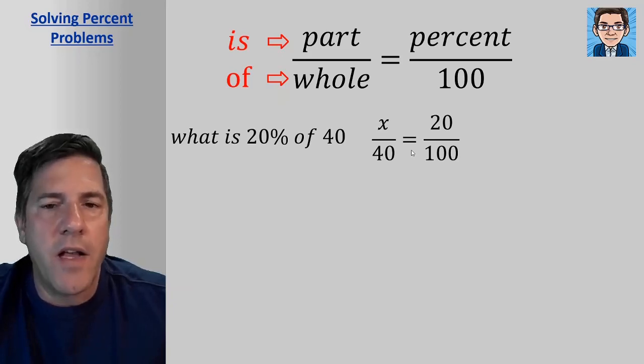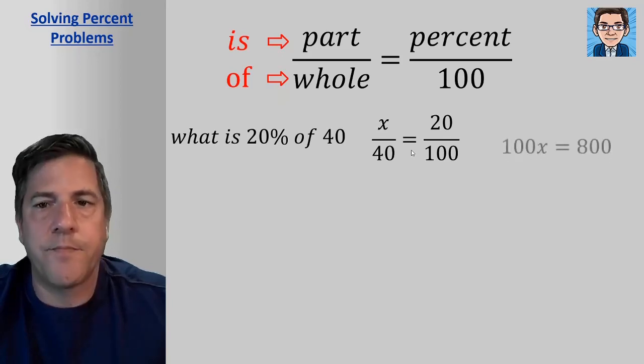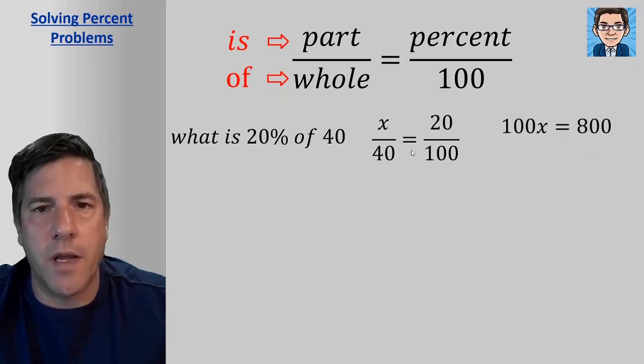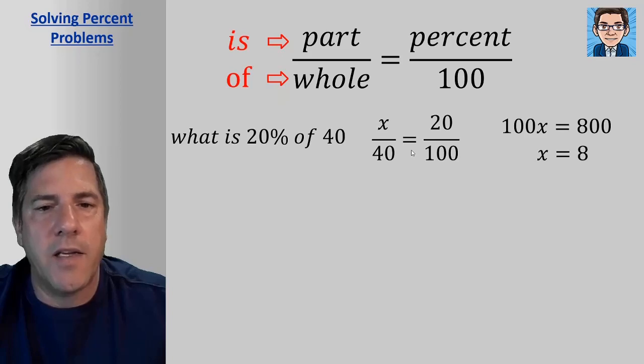So now to solve for x, we've got to cross multiply here. We're going to multiply the x times the 100 and the 40 times the 20 and set them equal to each other. So we get 100x equals 800. To solve for that, we just divide by 100 and get x equals 8.